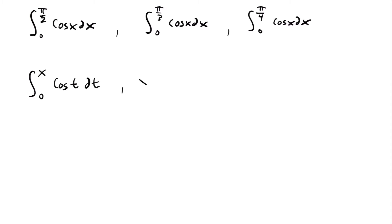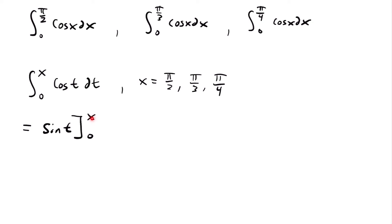We evaluate this integral when x equals π/2, π/3, and π/4 — this integral represents those three integrals where x equals each of those upper bound values. Using the first part of the fundamental theorem of calculus, the integral of cosine t is sine t, evaluated from 0 to x. Plugging in x and 0 into sine t, we get sine x minus sine 0. Since sine of 0 equals 0, this is just equal to sine x.